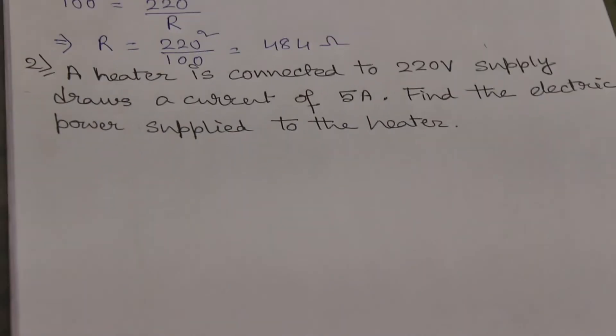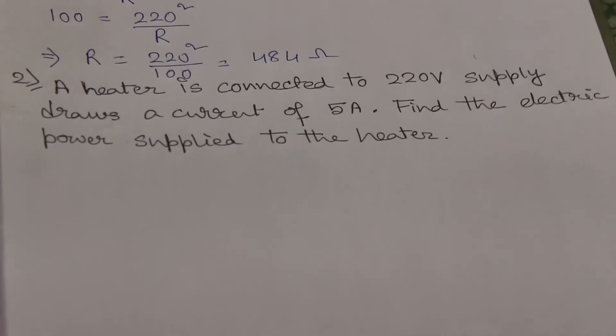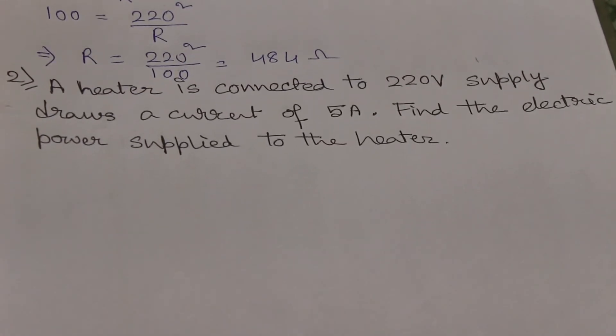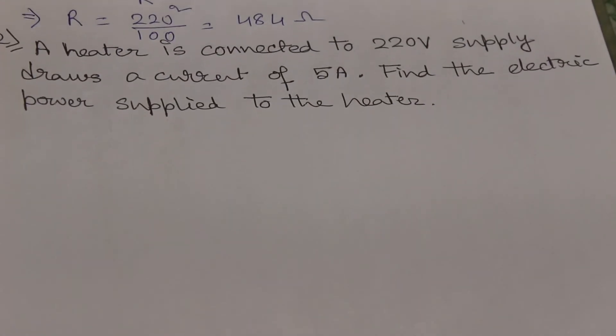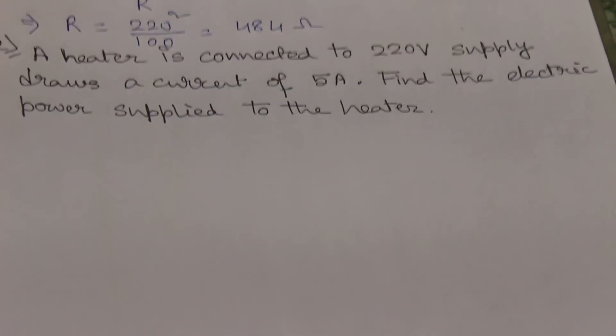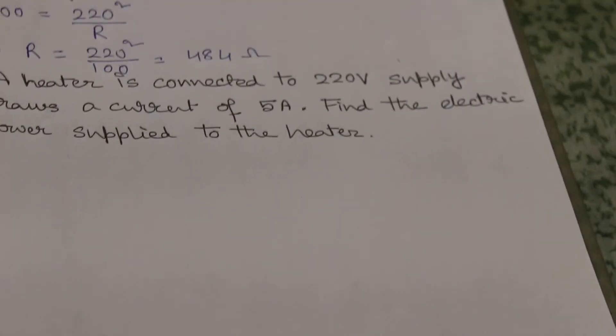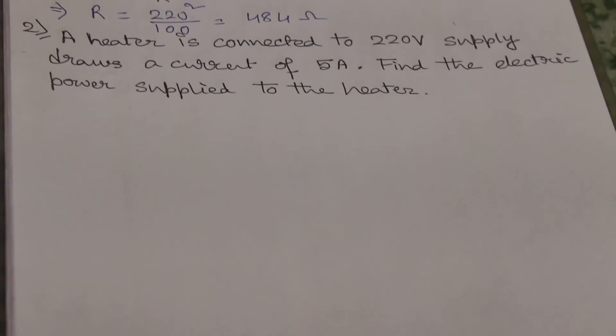A heater is connected to 220 volt supply, draws a current of 5 ampere. Find the electric power supplied to the heater. So here V is given, I is given, we have to calculate P, so we will use the first formula.